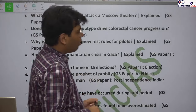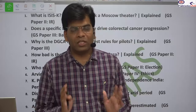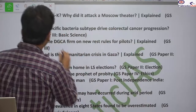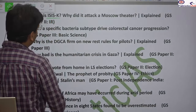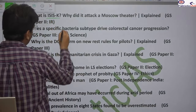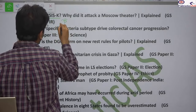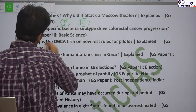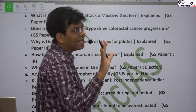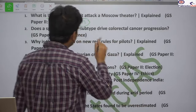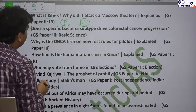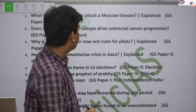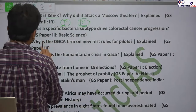Next is the terrorist attack on Russia. We will study which terrorist group was responsible, its ideology, and its history. This is relevant for International Relations and useful for both prelims and mains, as you should know the geographical location and the fight between different terrorist groups and ideologies in the Middle East and West Asia.